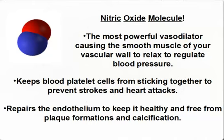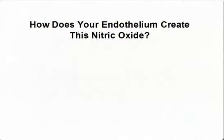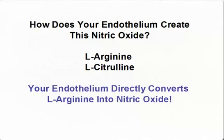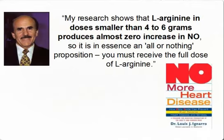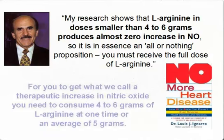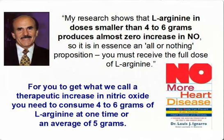So how does your endothelium create nitric oxide? Well, there are two important amino acids needed: L-arginine and L-citrulline. Your endothelium directly converts L-arginine into nitric oxide, but it needs a certain level. According to Dr. Ignaro: "My research shows that L-arginine in doses smaller than 4 to 6 grams produce almost zero increase in nitric oxide. So it is in essence an all-or-nothing proposition. You must receive the full dose of L-arginine." To get a therapeutic increase in nitric oxide, you need to consume 4 to 6 grams of L-arginine at one time, or an average of 5 grams.